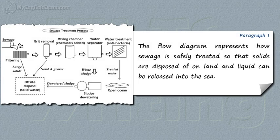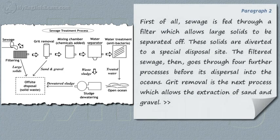The flow diagram represents how sewage is safely treated so that solids are disposed of on land and liquid can be released into the sea. First of all, sewage is fed through a filter which allows large solids to be separated off. These solids are diverted to a special disposal site. The filtered sewage then goes through four further processes before its dispersal into the oceans.